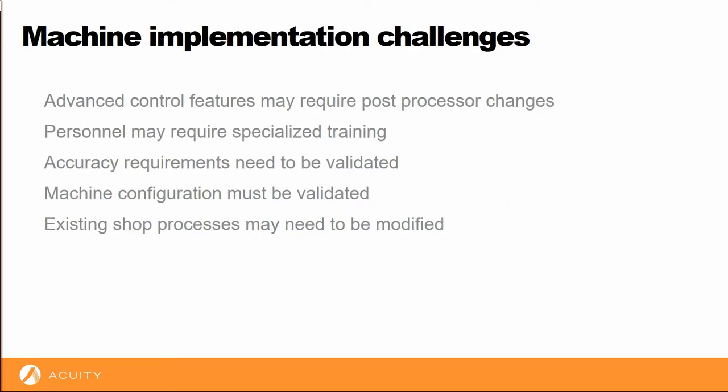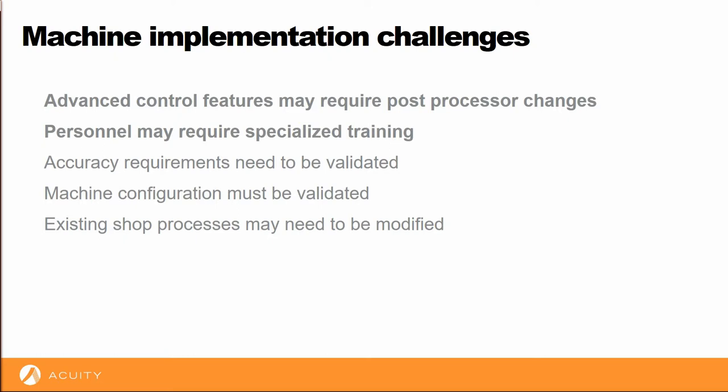When the time comes to implement your machine, you'll face additional challenges. If these aren't identified up front, your implementation will likely be delayed. At that point, you're reacting rather than proactively managing your project. If your machine has complex kinematics or advanced control functions, a new post processor or a modified post may be required. If so, this work will need to be defined and someone will need to be scheduled to complete it. Training may be required for the machine or the post. If you purchased additional features for your machine, the standard training is not sufficient.